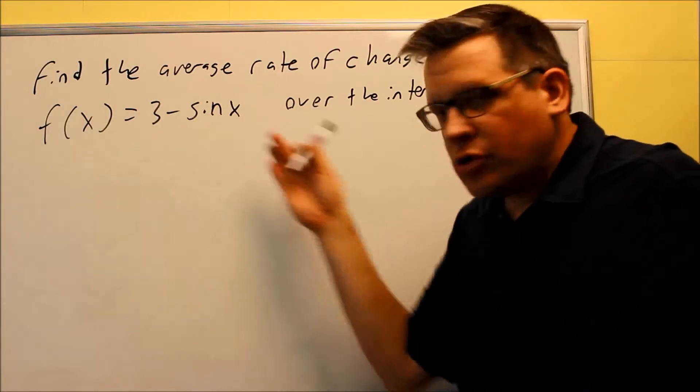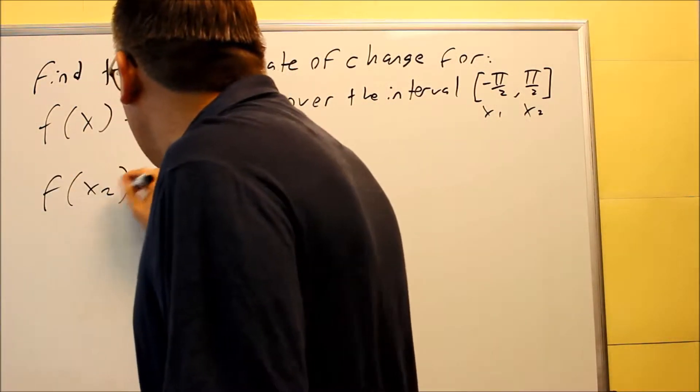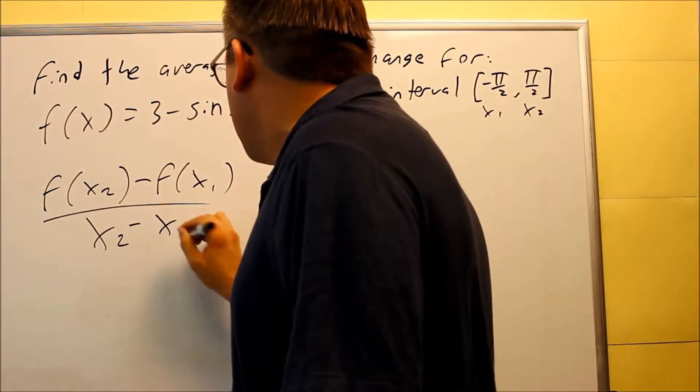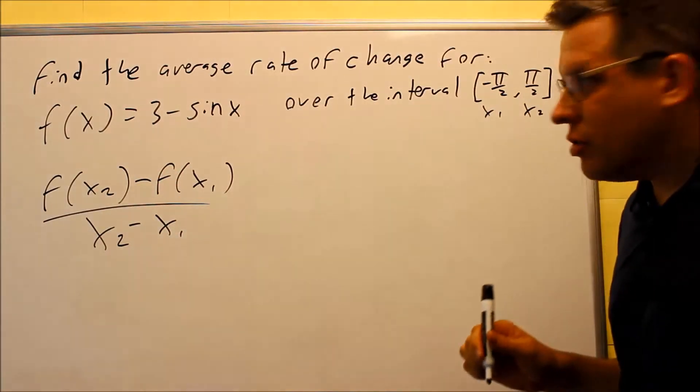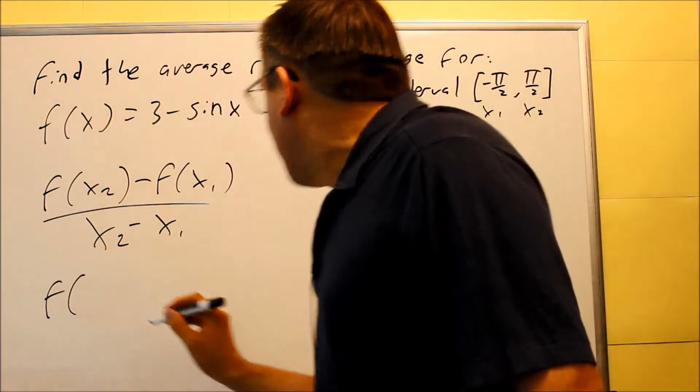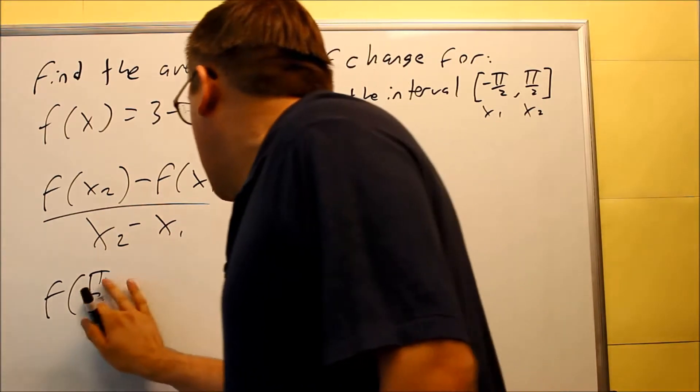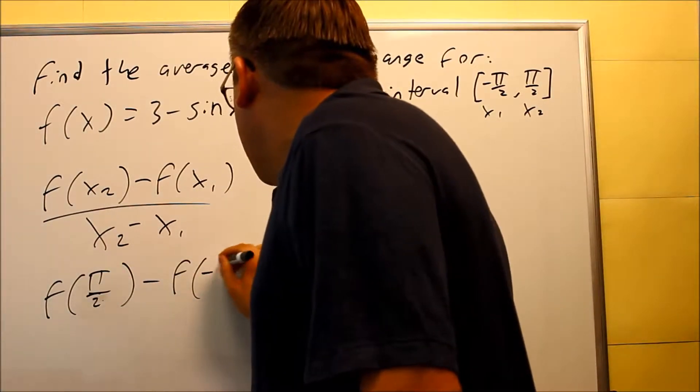Now we're going to do the same formula that we talked about before. We're going to do f of x2 minus f of x1 over x2 minus x1. So we're going to do this part off on the side. Really what we're doing is f of pi over 2 minus f of negative pi over 2.